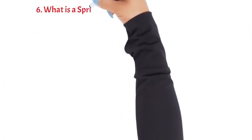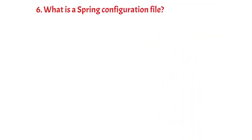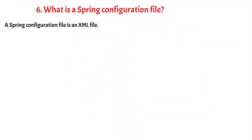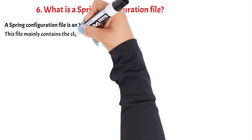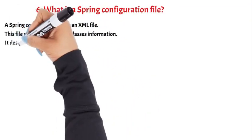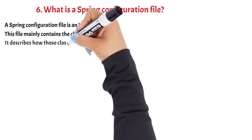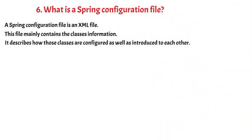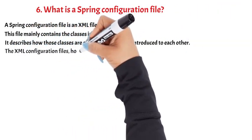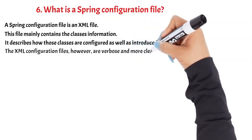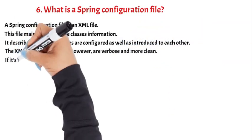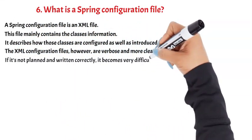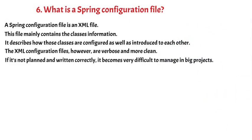Question 6: What is a Spring configuration file? A Spring configuration file is an XML file. This file mainly contains class information — it describes how those classes are configured as well as introduced to each other. However, XML configuration files are verbose, and if not planned and written correctly, it becomes very difficult to manage in big projects.